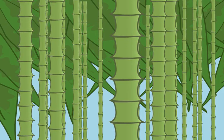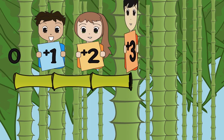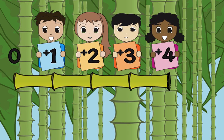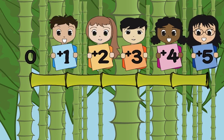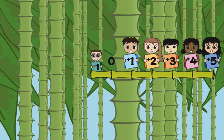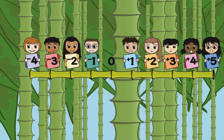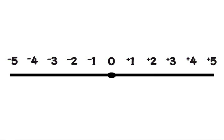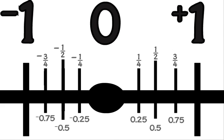The point labeled zero is called the origin. Numbers to the right of zero are greater than zero and are positive numbers. Numbers to the left are less than zero and are negative numbers. We can use a number line to represent whole numbers as well as the fractions and decimals that lie between them.